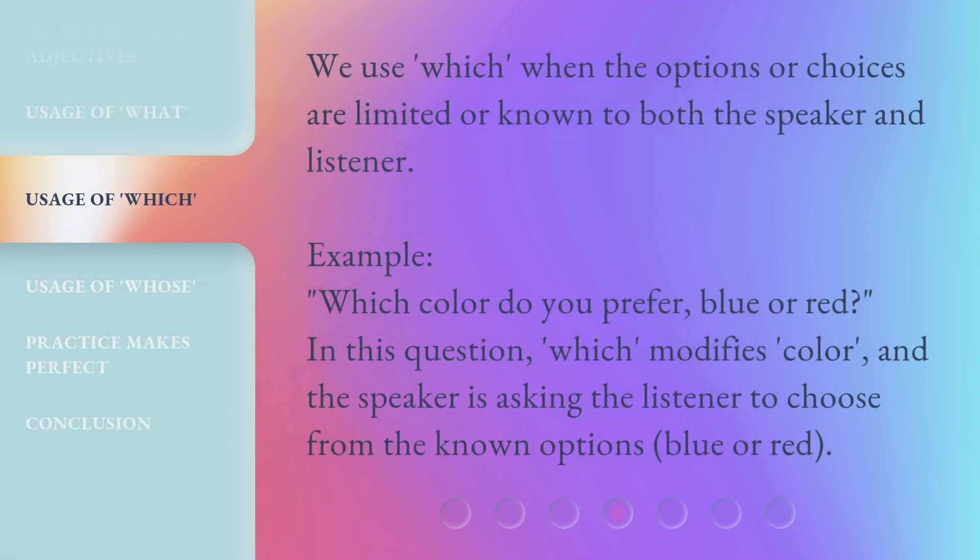We use "which" when the options or choices are limited or known to both the speaker and listener. Example: "Which color do you prefer, blue or red?" In this question, "which" modifies "color," and the speaker is asking the listener to choose from the known options: blue or red.